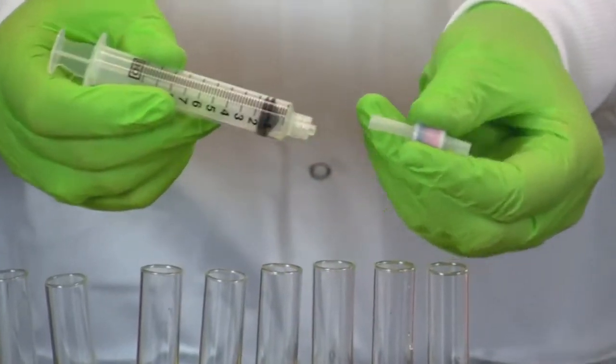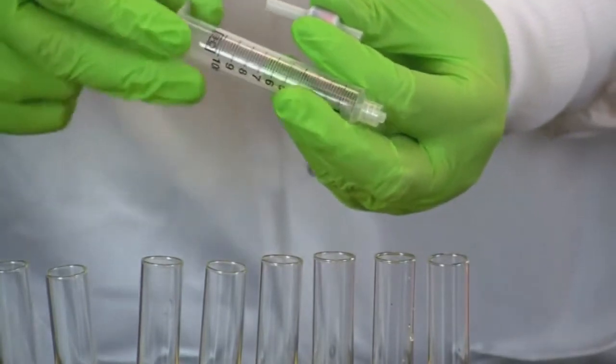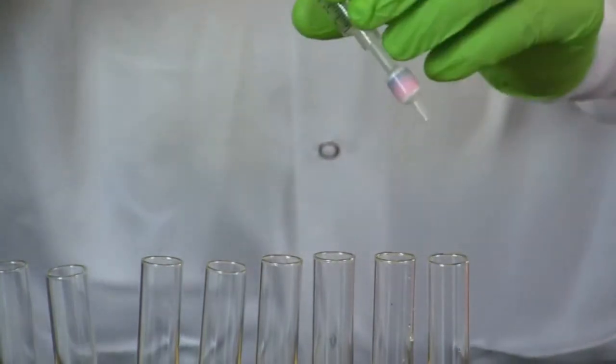Once the flow through is clear, remove the cartridge, pull out the plunger, and then reattach the cartridge to the syringe.